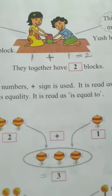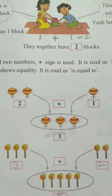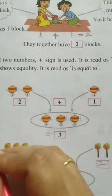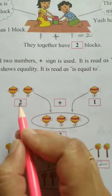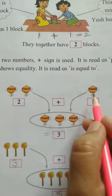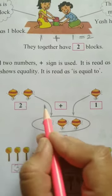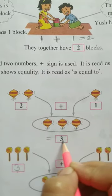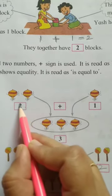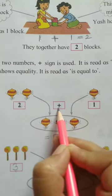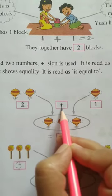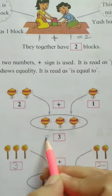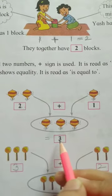Now let us take another example. Look at this picture — there are two tops, one, two. And this is one top. They together have one, two, three — three tops. Two plus one is equal to three.